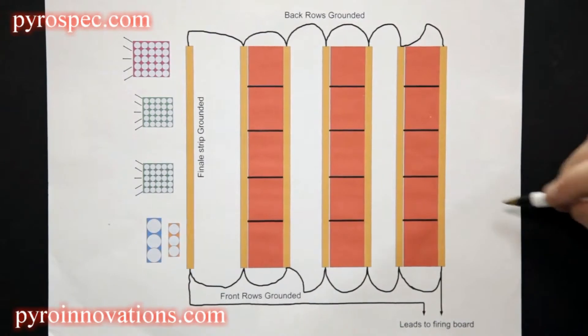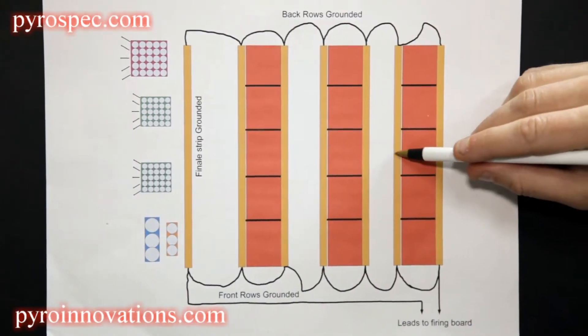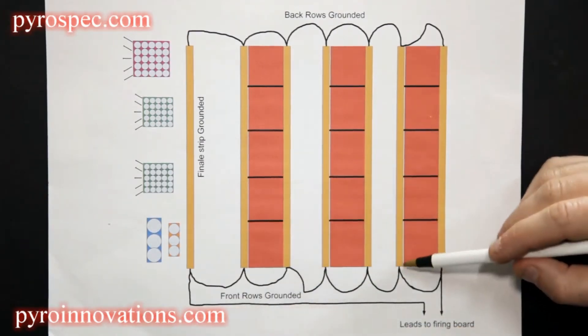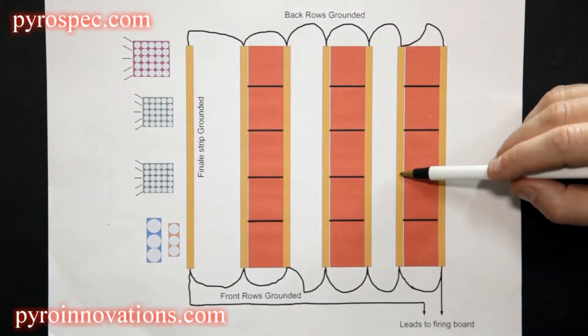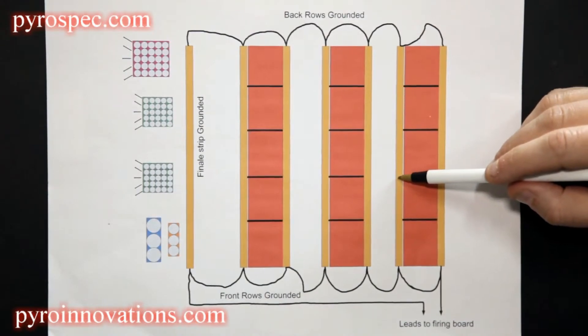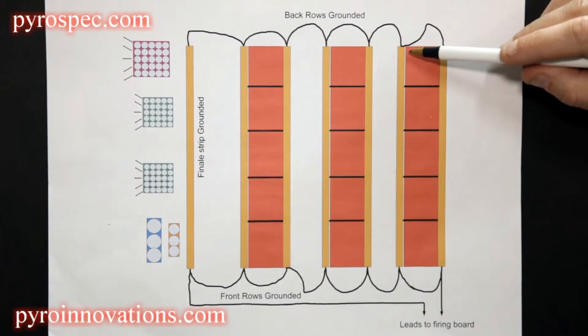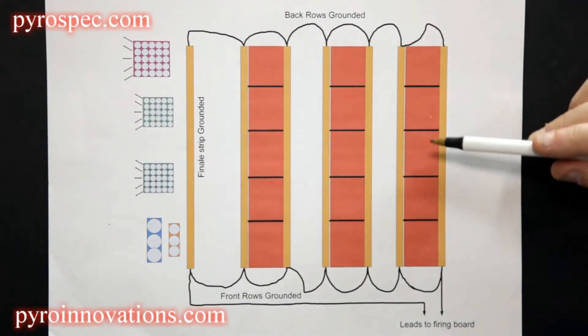If there was a break internal to the strip and we only had this front portion grounded, we could fire everything up until that point on this particular strip, but everything behind that would not be fireable.